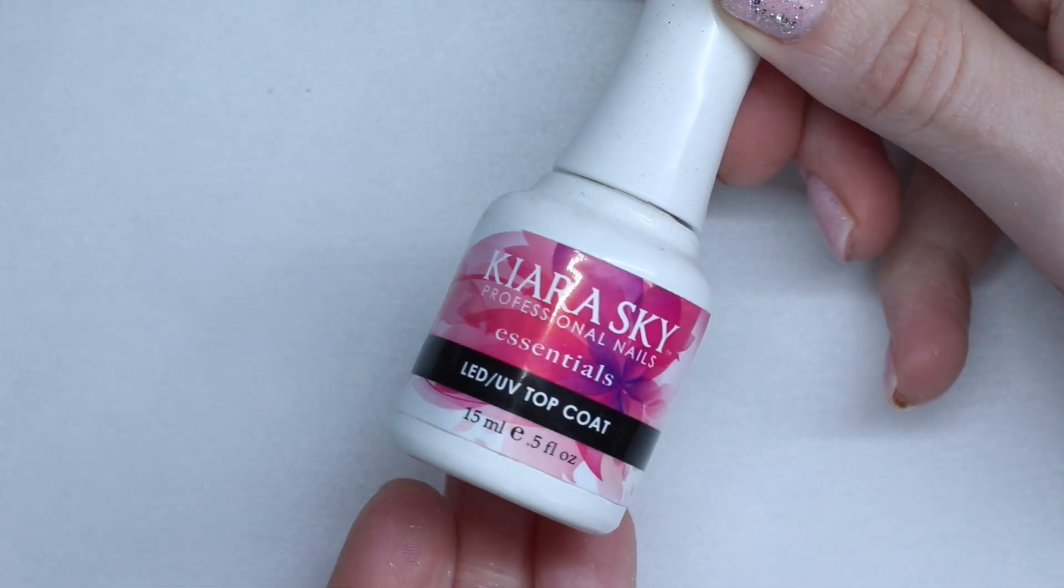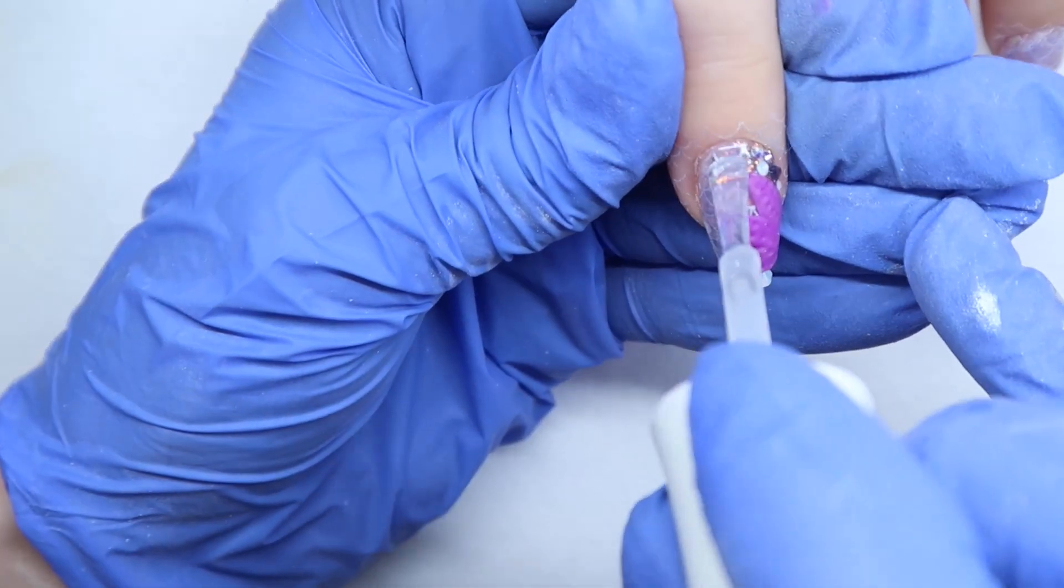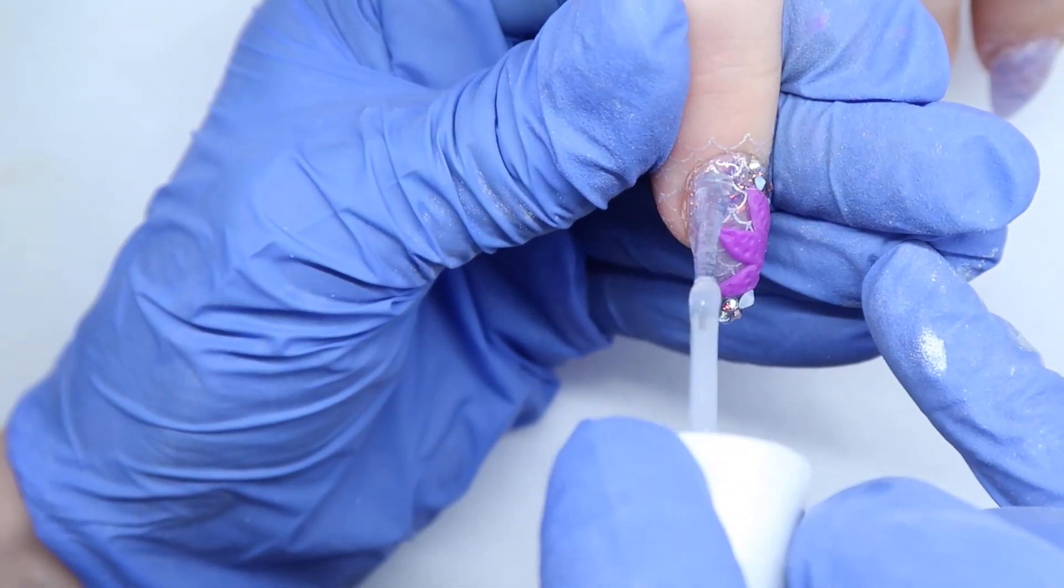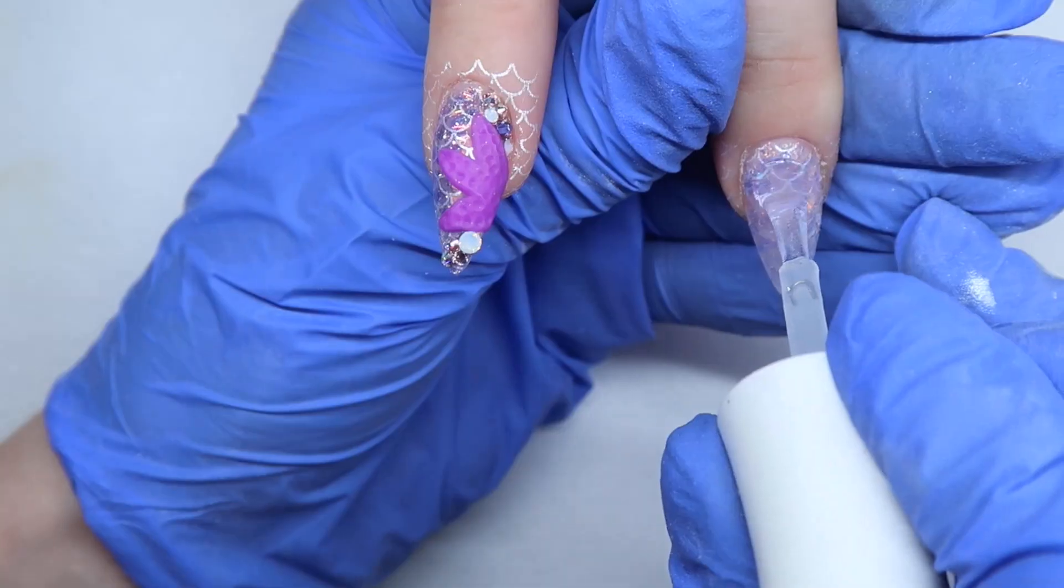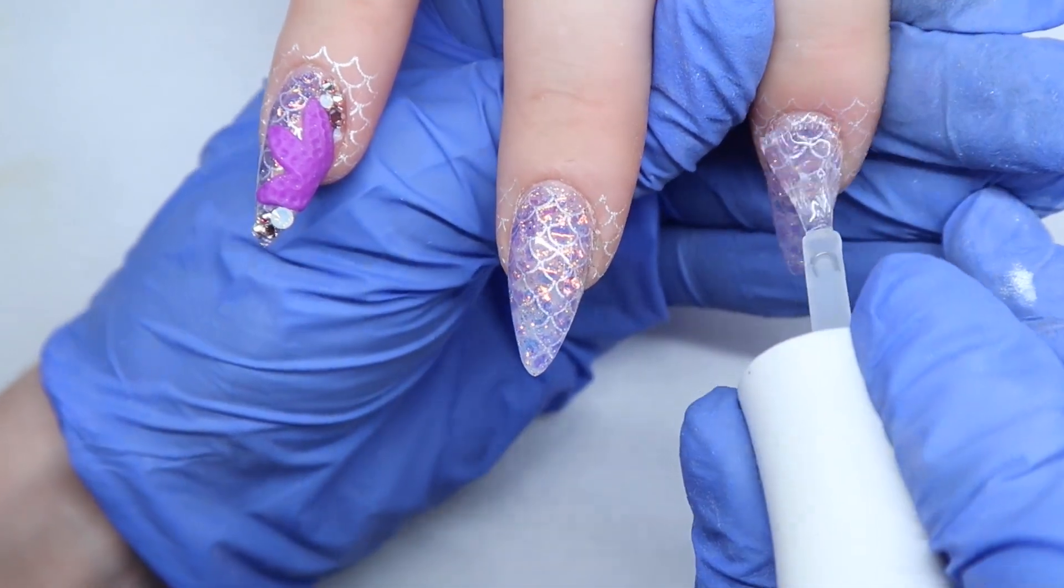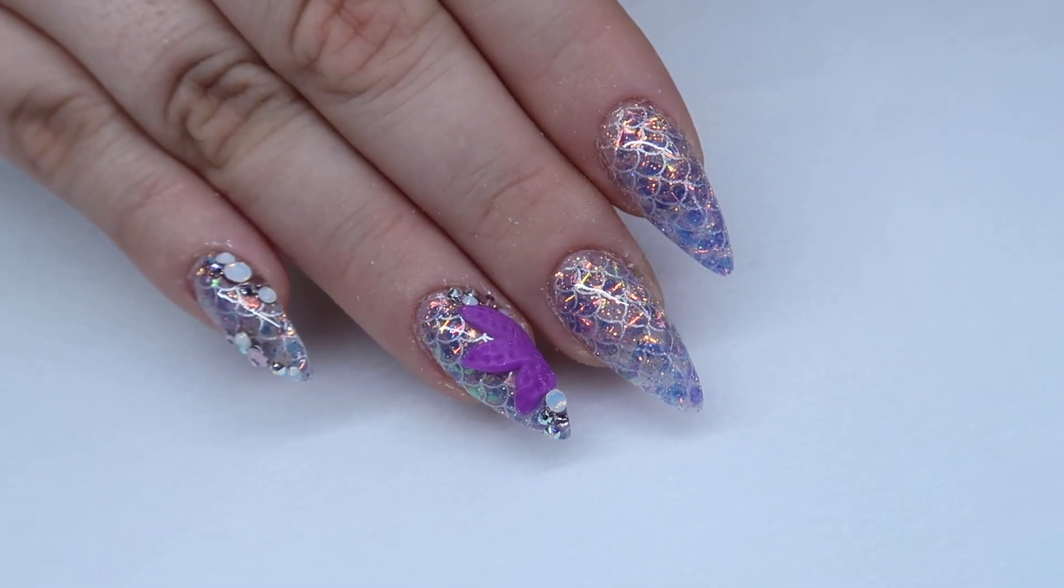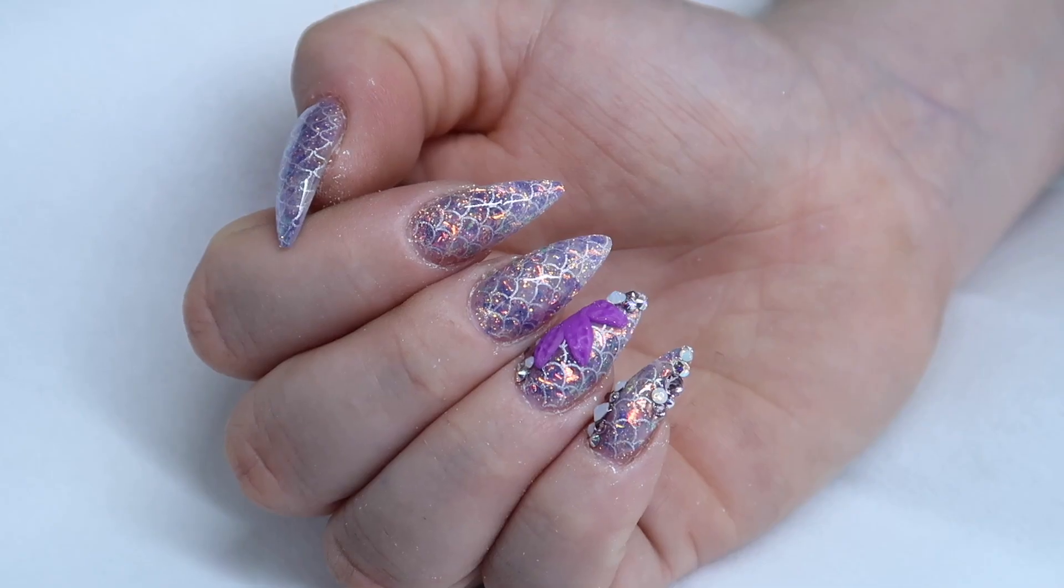The top coat I'm using is the Kira Sky No Wipe Top Coat. And I'm just applying this on the nails and not on top of the crystals, and not on top of the starfish, because I wanted the starfish to kind of have a matte finish to it. Then you're going to want to give that a full cure. And then I removed all the leftover stamping polish that was on her skin. And here's the finished design.